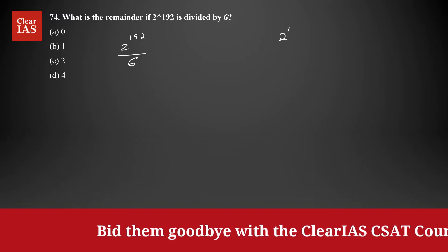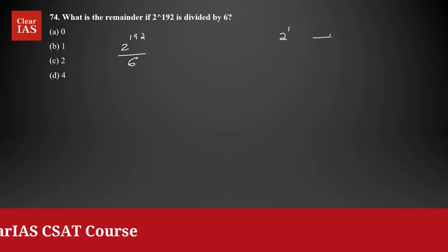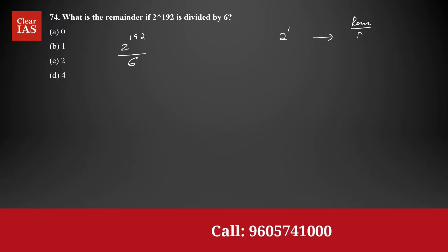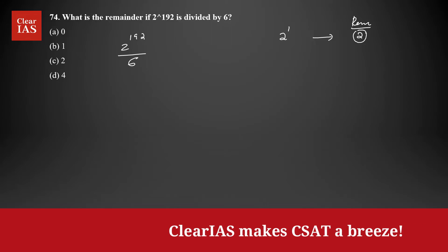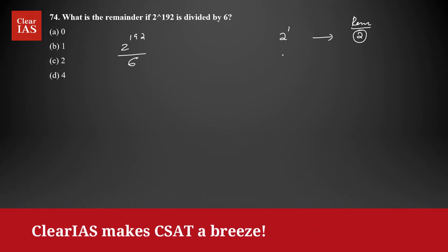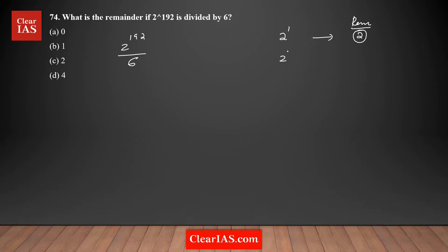When you divide 2 to the power 1 by 6, the remainder is 2, because you are dividing a smaller number by a bigger number. Next, 2 to the power 2 is 4 — when you divide by 6, the remainder is 4, since 4 is smaller than 6.